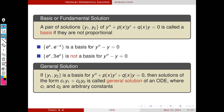Next, we consider another definition: the general solution. If y1, y2 is a basis for a homogeneous differential equation, then the linear combination c1 y1 plus c2 y2 is called the general solution of this ODE, where c1 and c2 are arbitrary constants. Once we have a basis, we can define the general solution by taking all possible linear combinations of the basis elements.